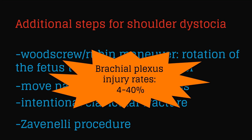Brachial plexus injury rates with a shoulder dystocia range from 4 to 40 percent regardless of the maneuvers used to deliver the fetus.